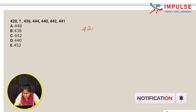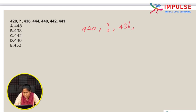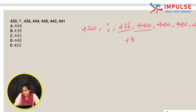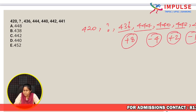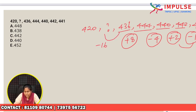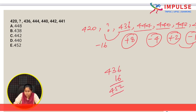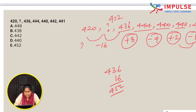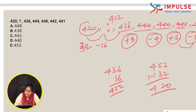Next question: 420, ?, 436, 444, 440, 442, 441. Looking at the differences and the pattern in the sequence. Working through the logic, the answer comes out to 452. Option E, 452.